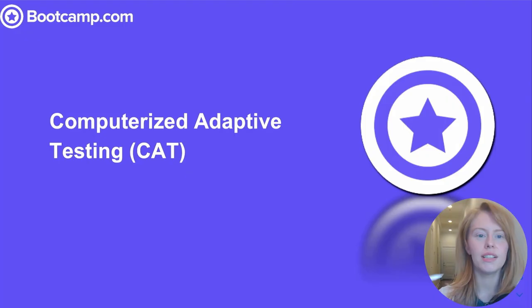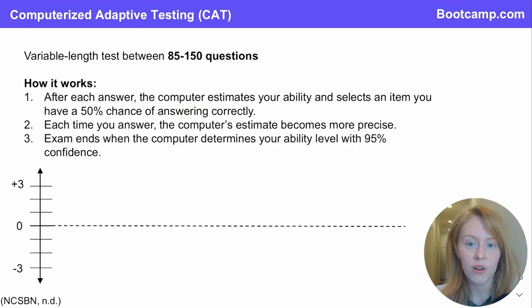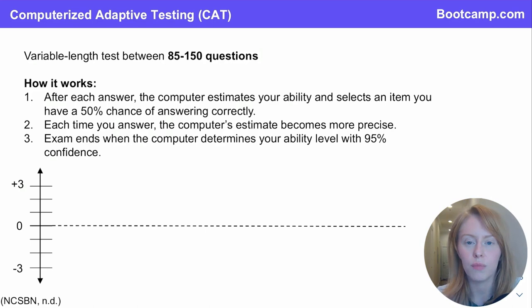So then how does computerized adaptive testing play into this? Well, the NCLEX is actually really interesting in that it's a variable length exam. Unlike most standardized tests where you have to answer hundreds and hundreds of questions in order to pass, the NCLEX can be as short as 85 questions or as many as 150 questions, and it all depends on this computerized adaptive testing algorithm, or CAT. How CAT works is that every single question on the NCLEX is assigned an ability level or a difficulty level.